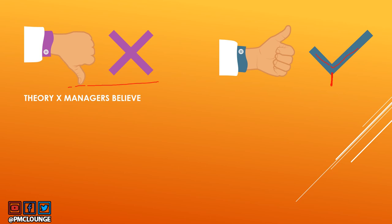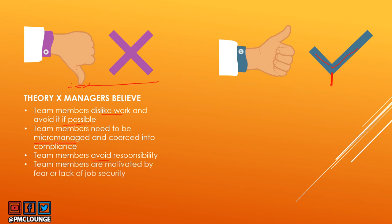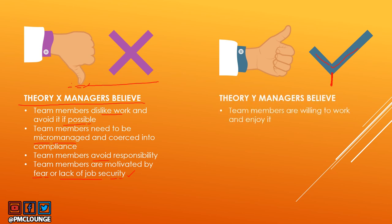Why do we give Theory X a thumbs down? Remember, 'managers' is the key word here. Theory X managers — managers that follow Theory X — believe that team members dislike work and avoid it if possible. Team members need to be micromanaged and coerced into compliance if required. Team members avoid responsibility. Team members are motivated by fear or lack of job security — don't give them job security and they'll keep working. This is what Theory X managers believe, and that is why it gets a thumbs down.